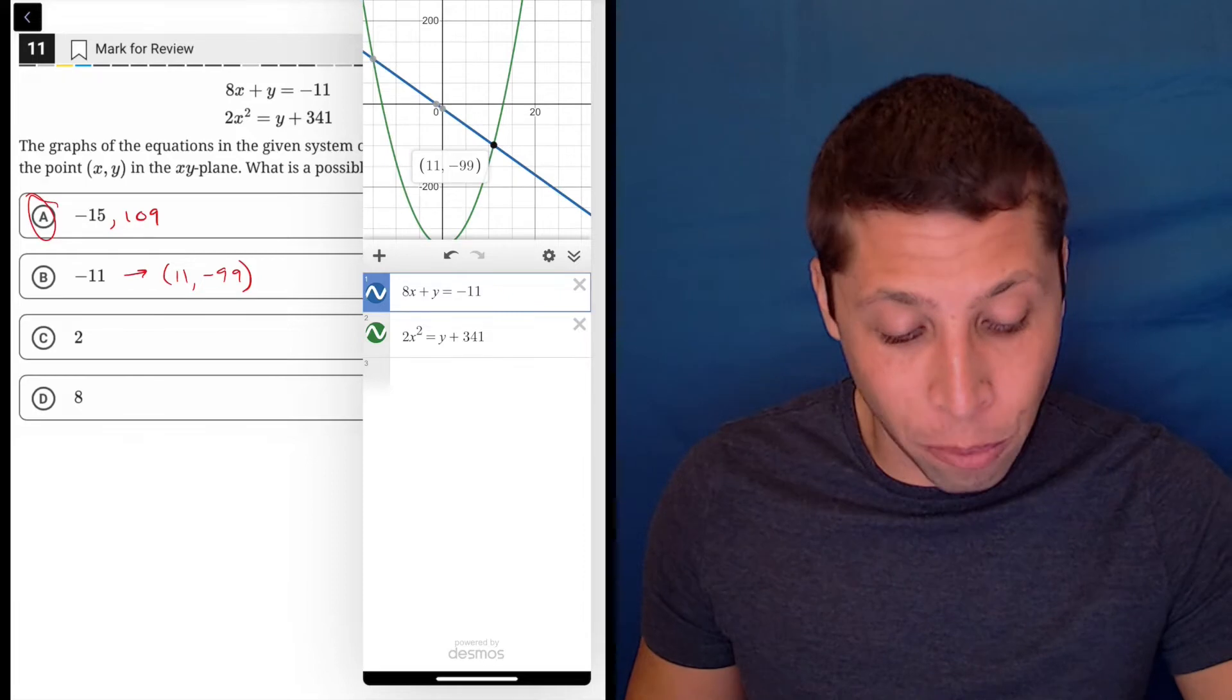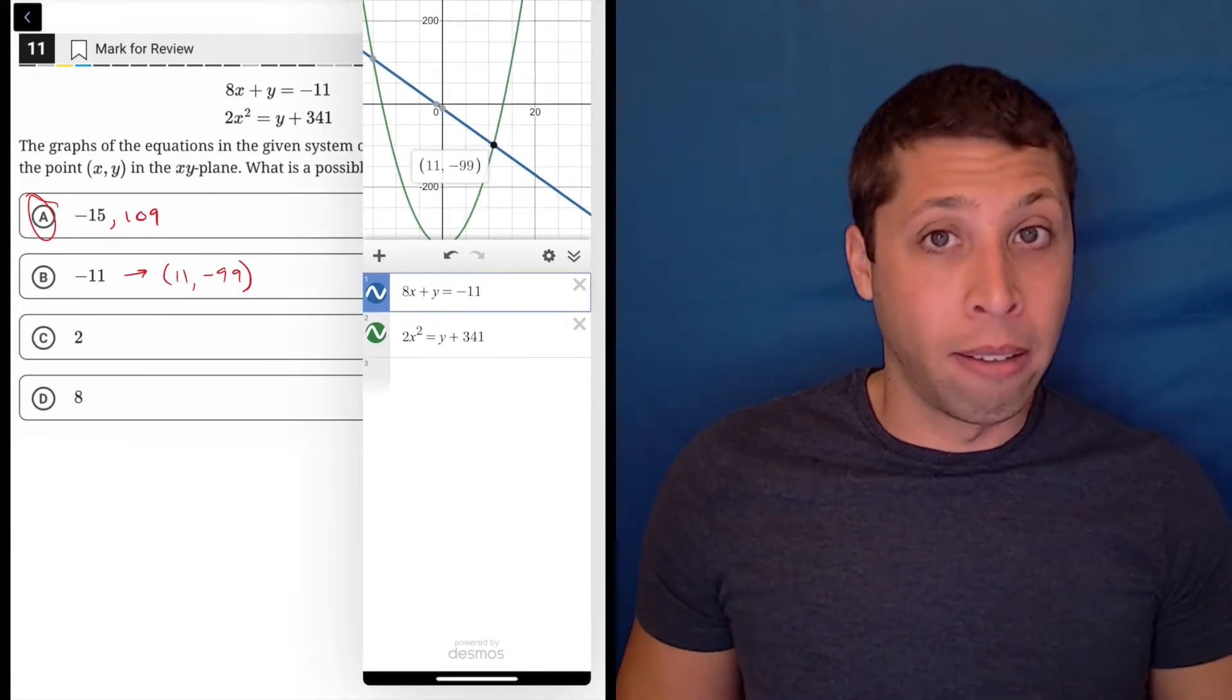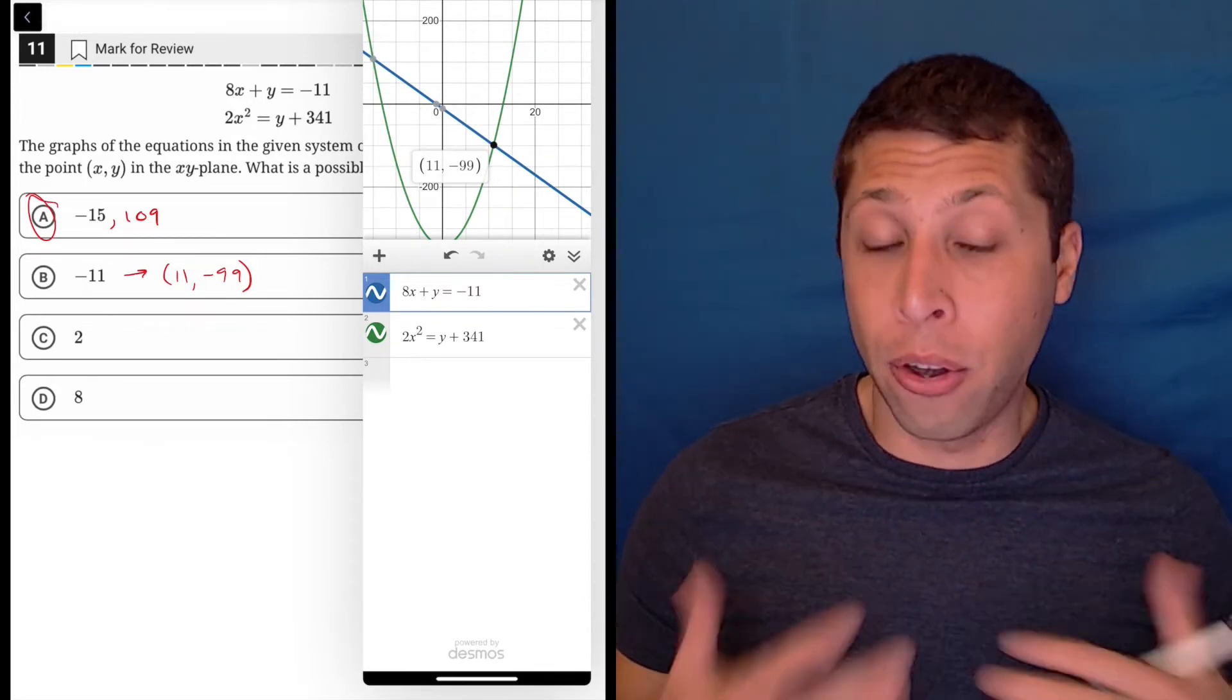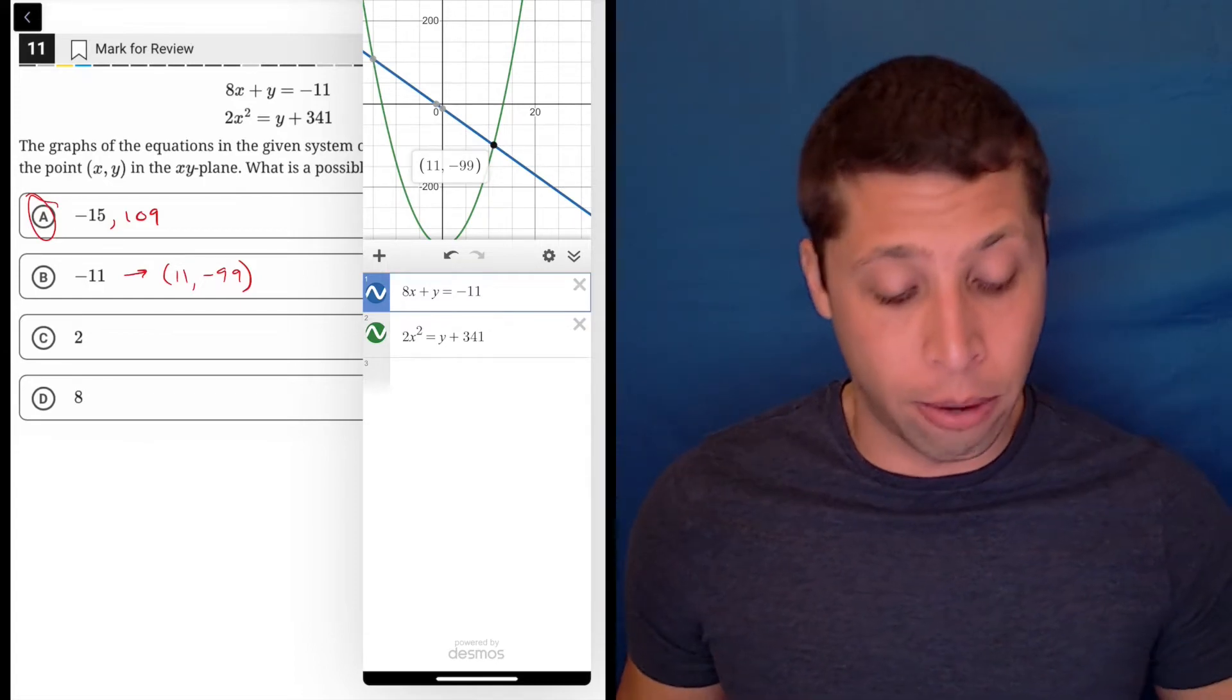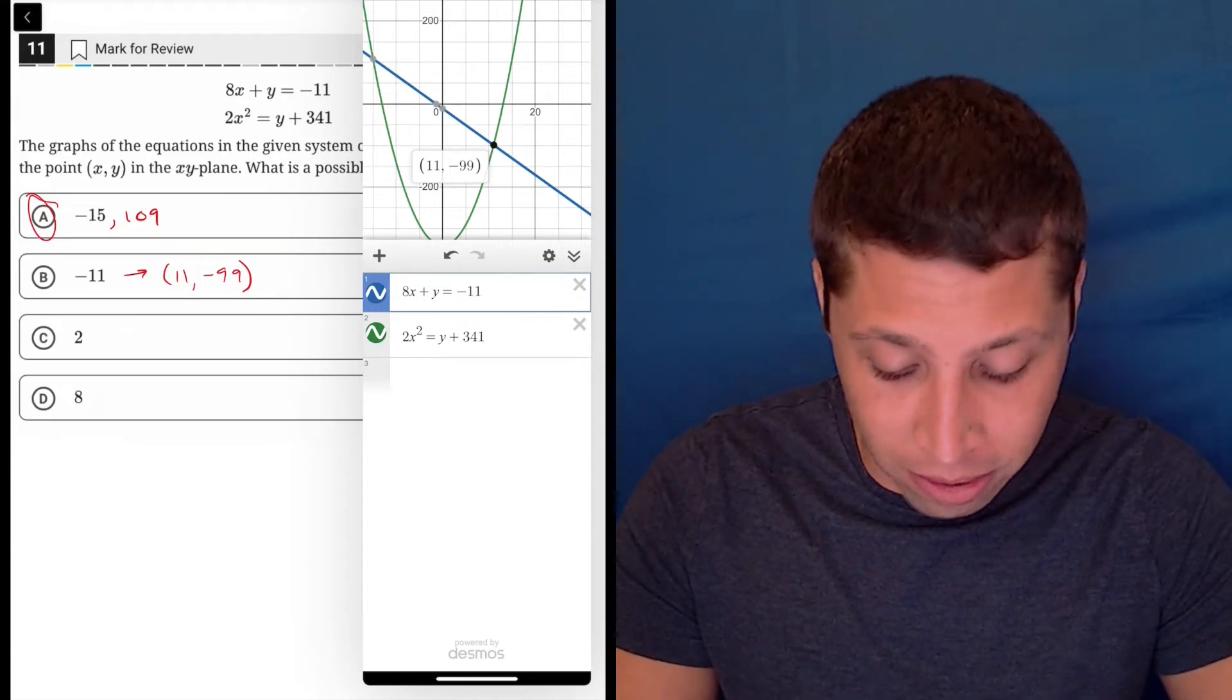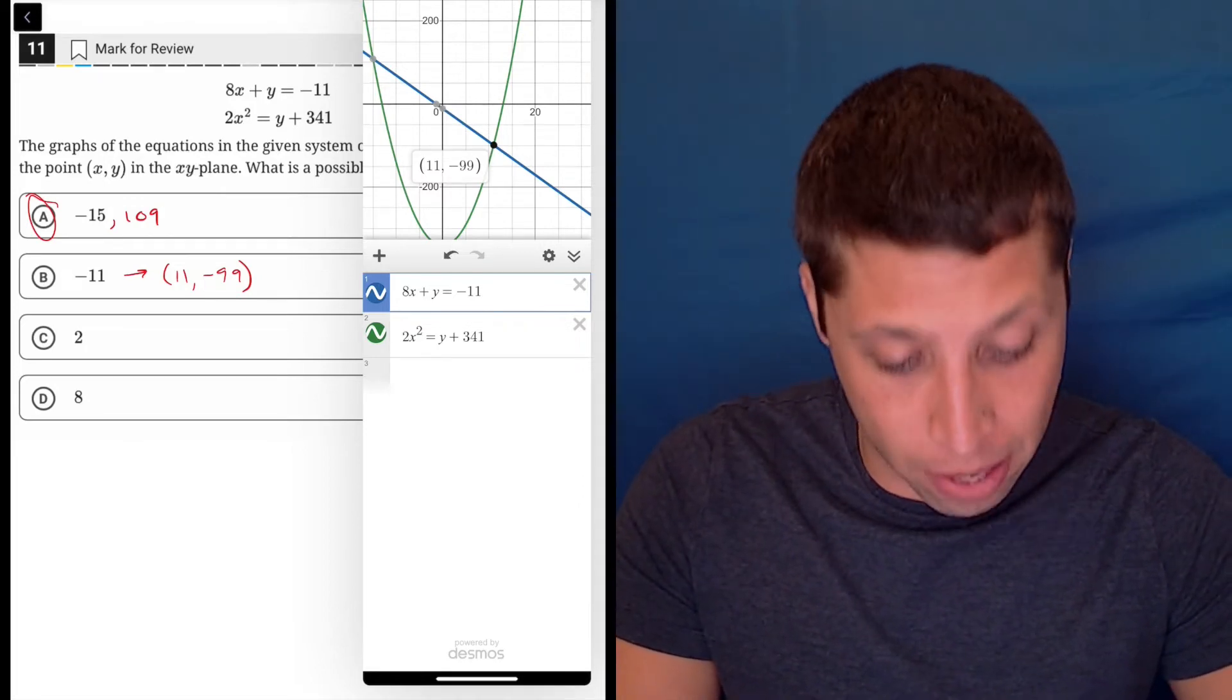The SAT makes all the wrong answers kind of for a reason. They choose them because they know we're going to mess up. Now again, I would have just done this and my answer is obvious. I have no math, no potential for kind of a screw up unless I entered the equations wrong. This calculator is definitely the way to go. But because you might want to be curious, I'm going to show you the algebra and we'll see why choice B exists as an answer choice, a trap answer choice.